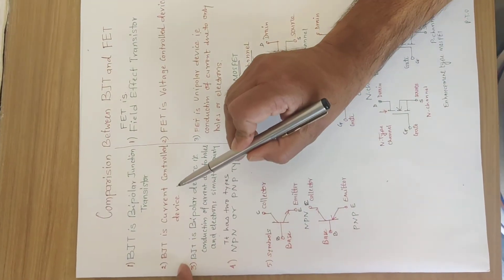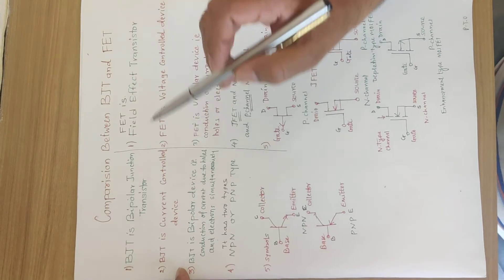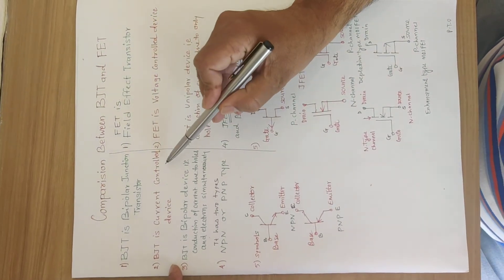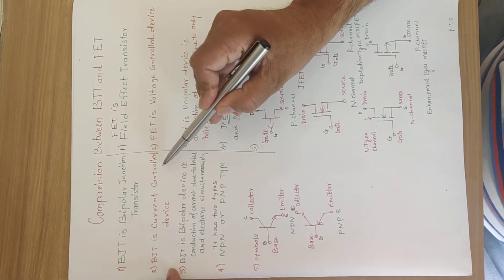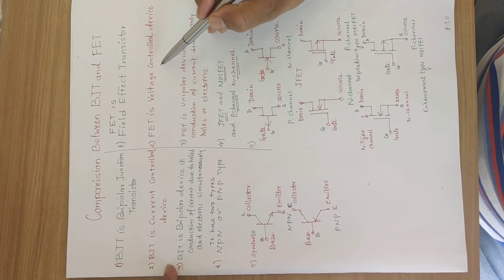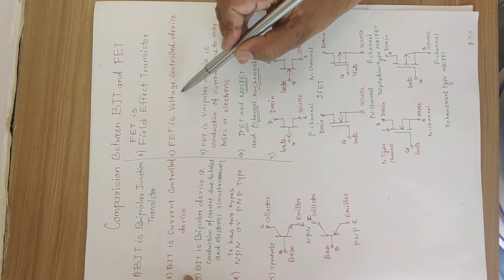BJT is current control device and FET is voltage control device. That is, the output current or output depends on the input current, and in FET the output depends on input voltage.